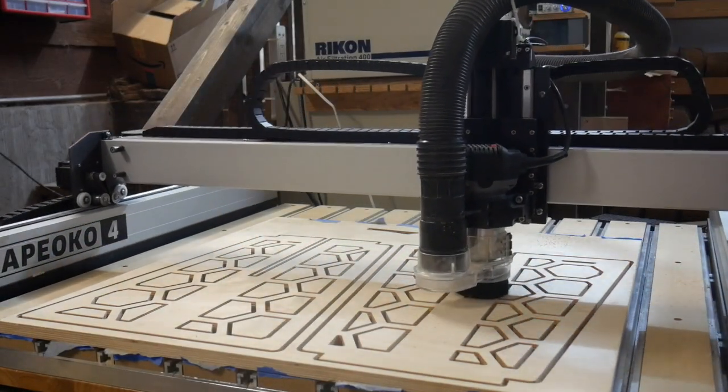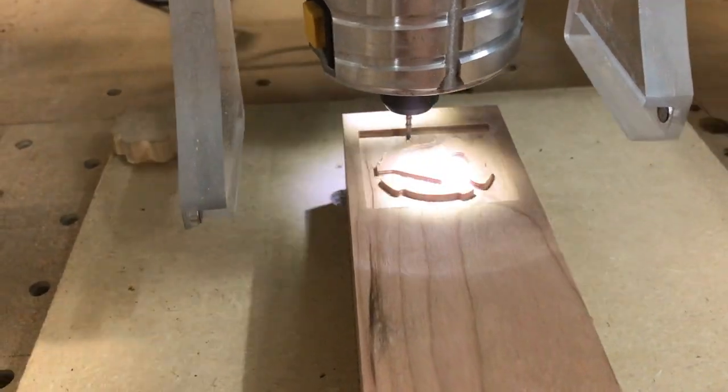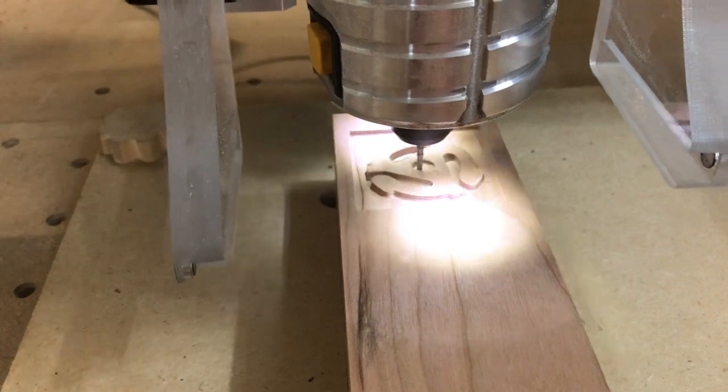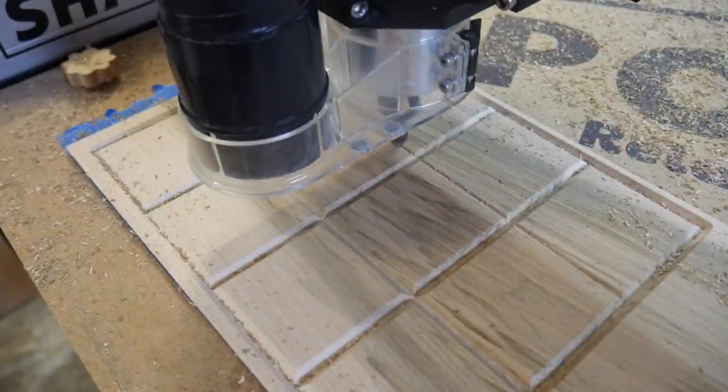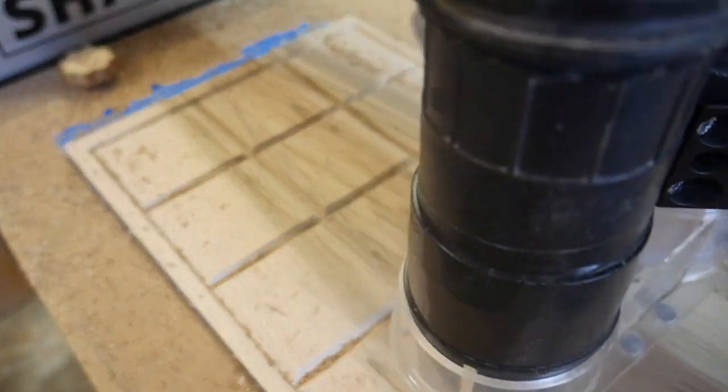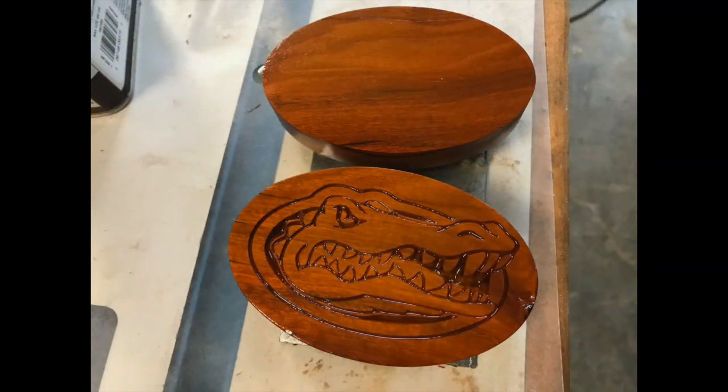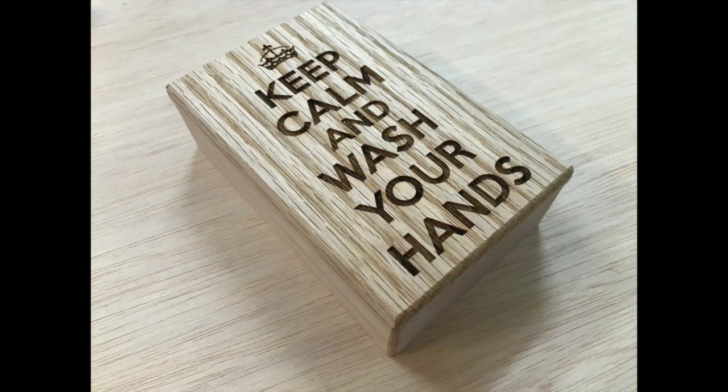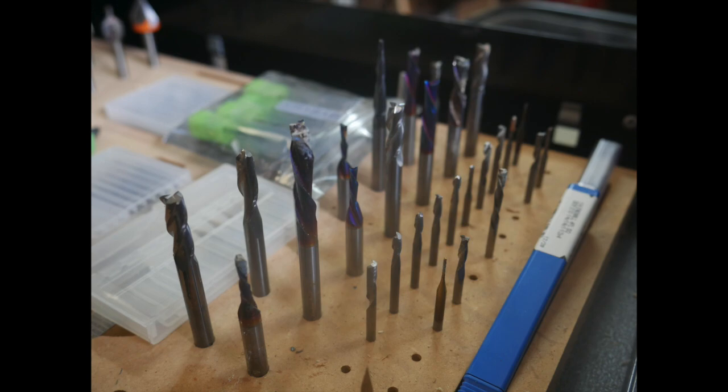The quarter inch bit handles most of your basic cuts and can be pushed pretty hard. For finer work and places where the quarter doesn't reach, the eighth inch bit is your go-to. Finally, for V-carving, etching, and miter joints, the 90 degree V-bit is really tough to beat. Trust me, as you begin to have more success, you will accumulate more bits.